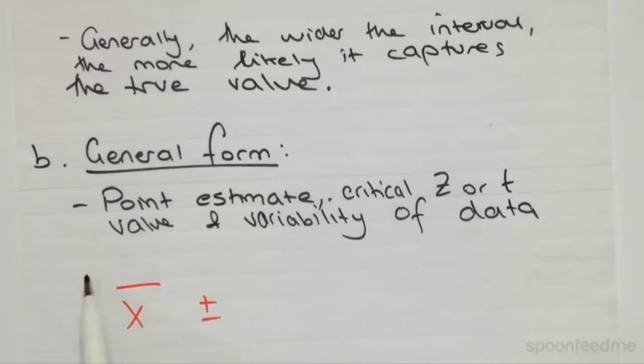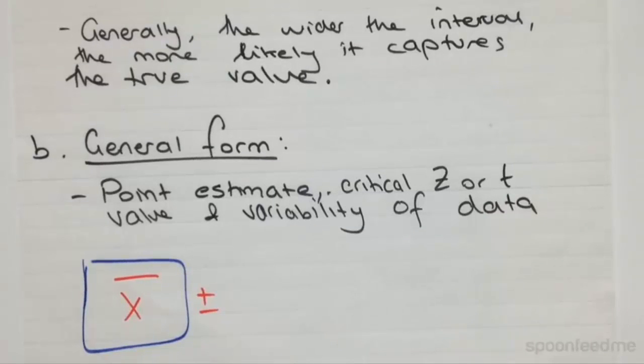So our point estimate is going to be the sample mean, and then we're going to add or subtract some kind of buffer, or an error, some kind of sampling error that represents the expected distance away from the true mean that we could be within the sample.